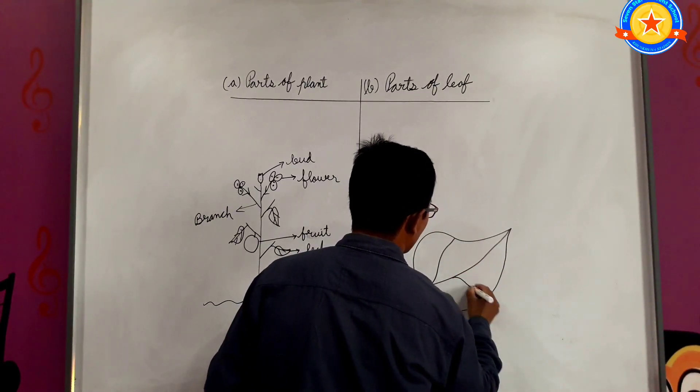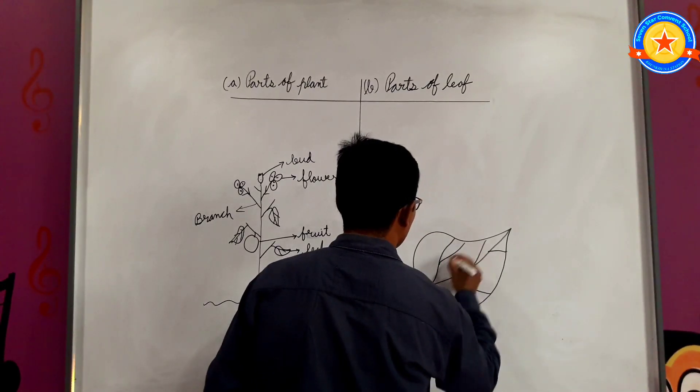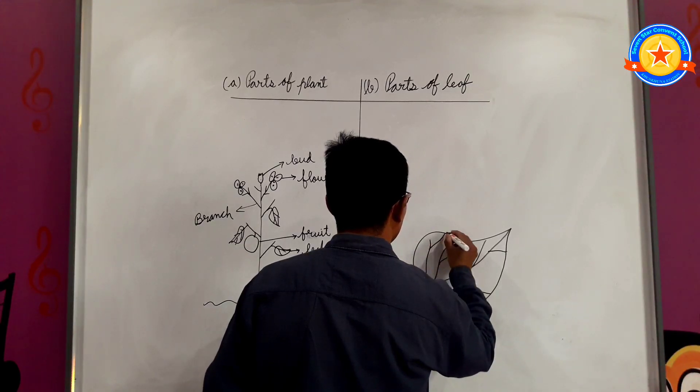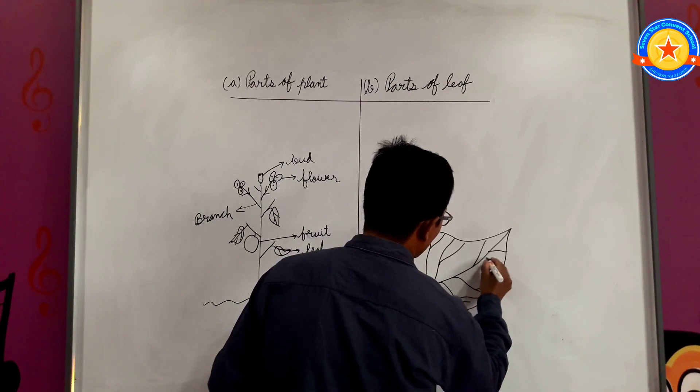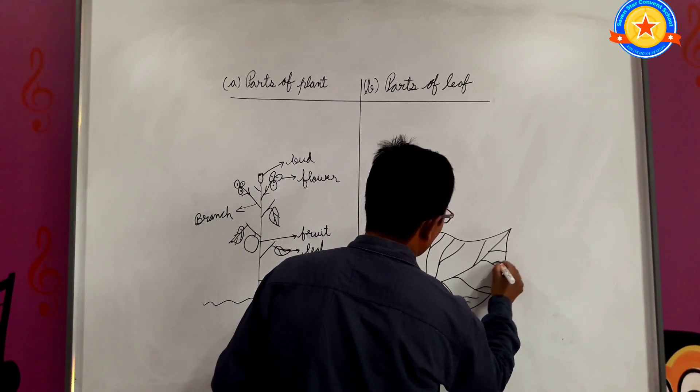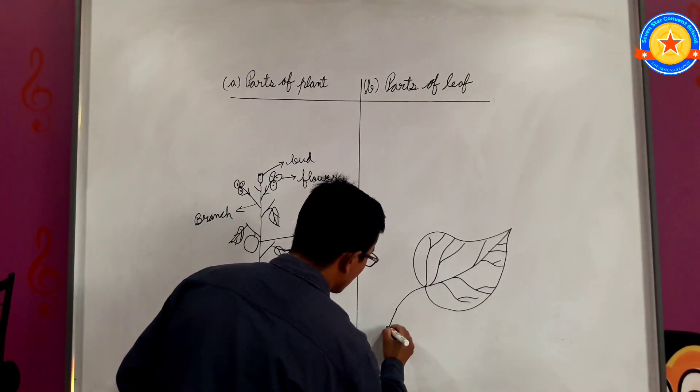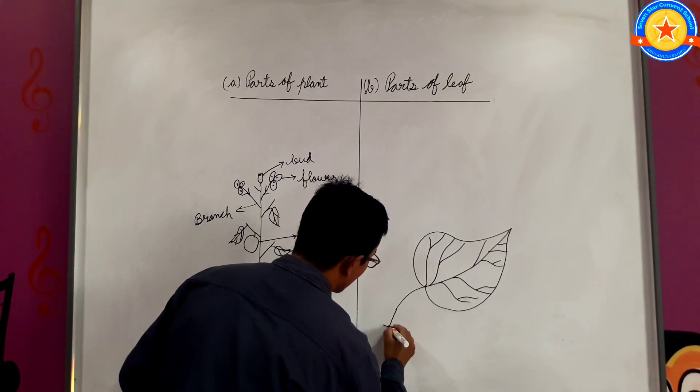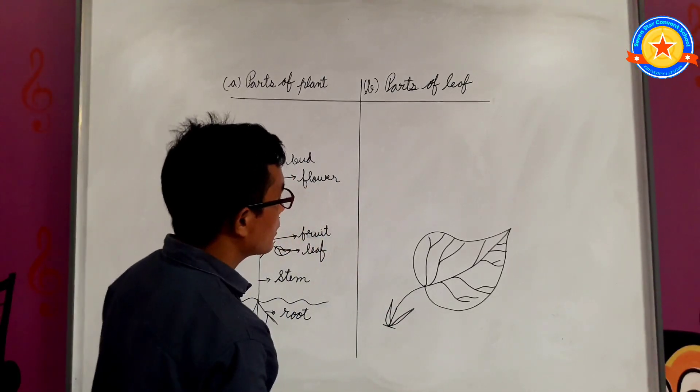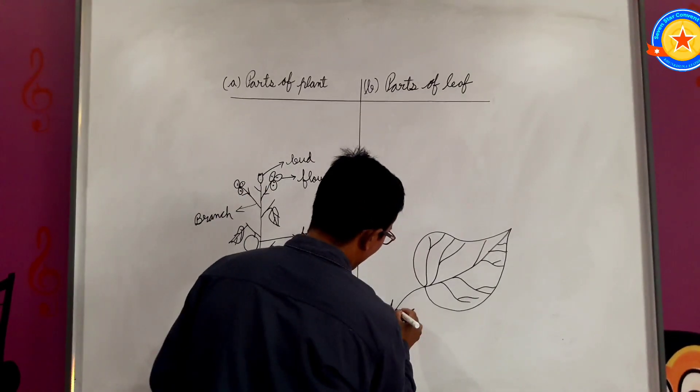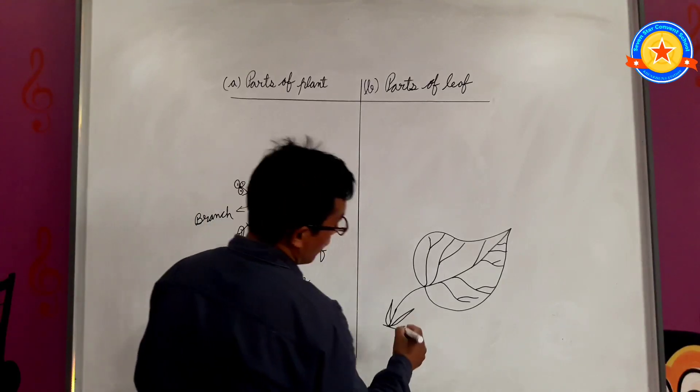This is a simple leaf. This is the leaf. Now, we will discuss parts of leaf.